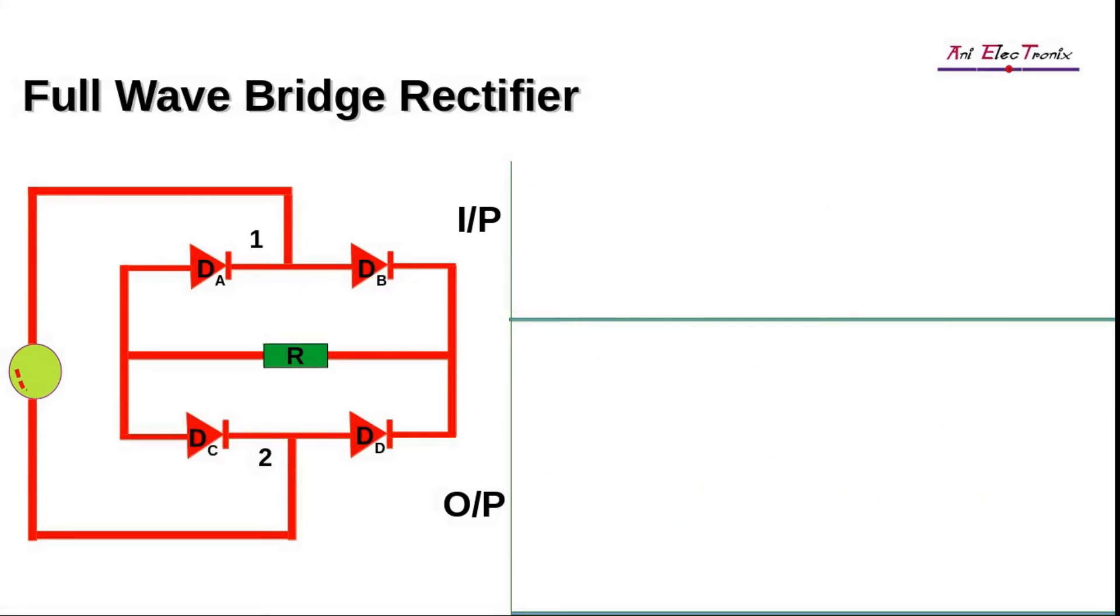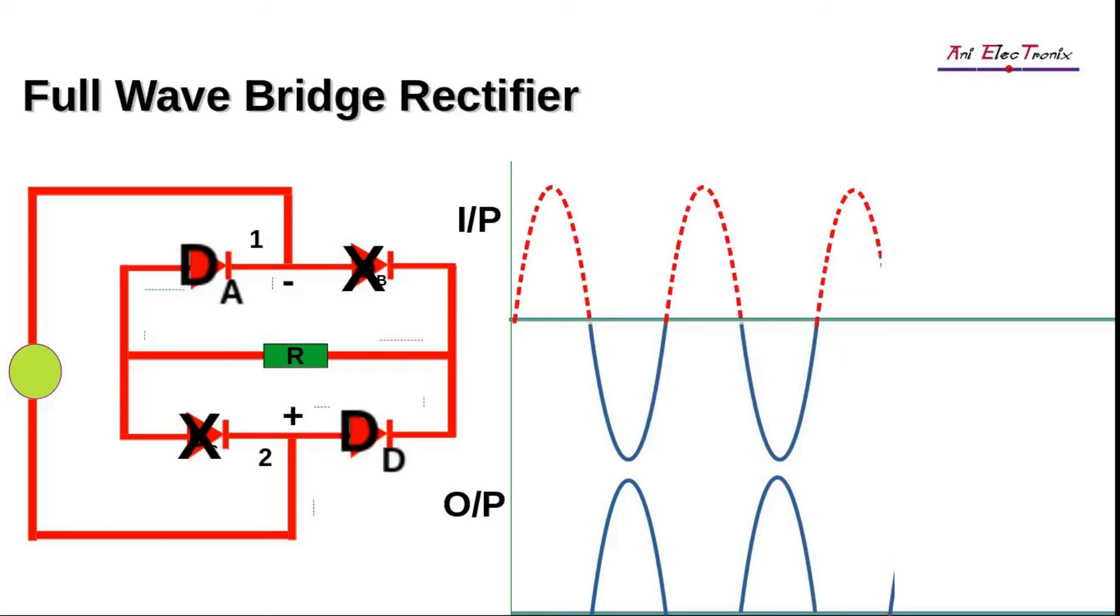During the negative half cycle, point 2 will always have a positive potential, while point 1 will have a negative potential. As a result, diodes DD and DA will be in forward bias and will begin to conduct.